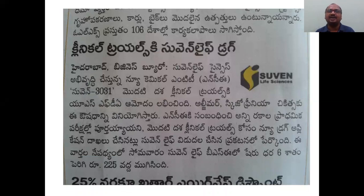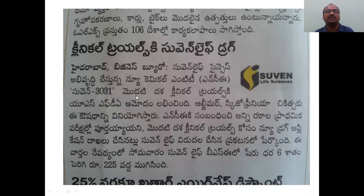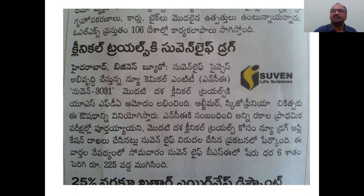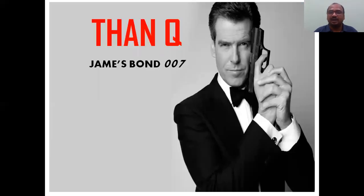This is one clinical trial by Suven Life Sciences. You can see the image — NCE 3031, first clinical trials. USFDA has given the approval. It is used for Alzheimer's and schizophrenia. You have to keep on following all these types of new developments — then only you will become an expert. Thank you very much. After subscribing, go to playlists — there you can find all my videos. Thank you.